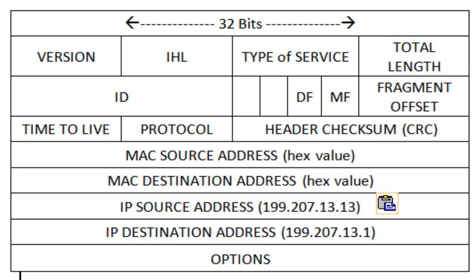There's also a payload and options — all these different types of field data are contained in the packet or datagram. Now, packets don't really look like this. They're just oscillating light pulses if it's fiber, or patterns of electrons flowing through a wire that vary in amplitude, frequency, and modulation.